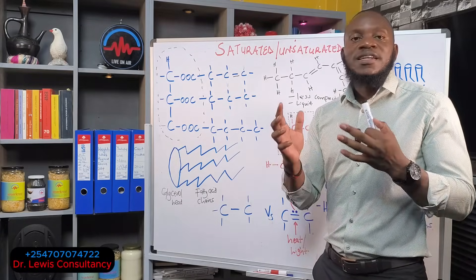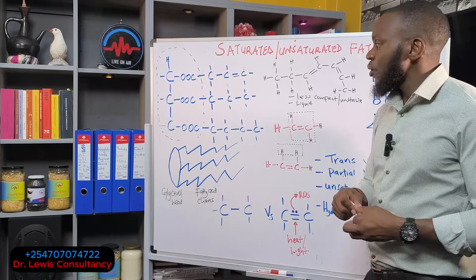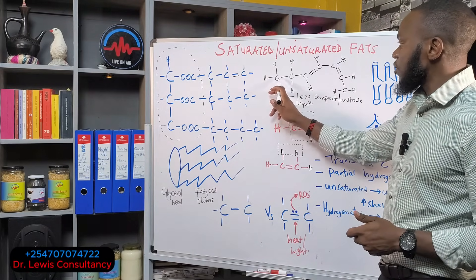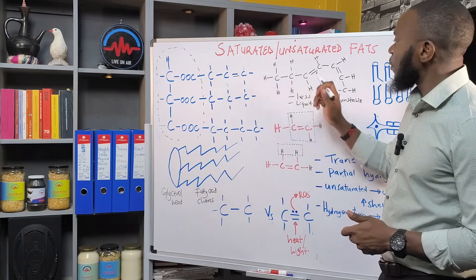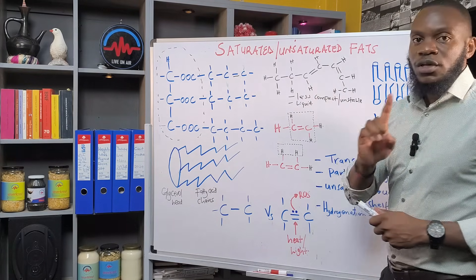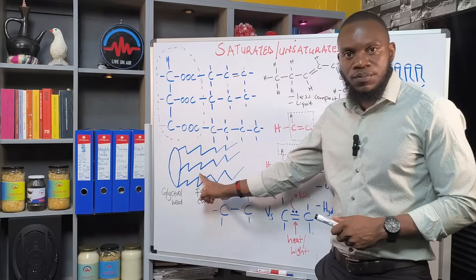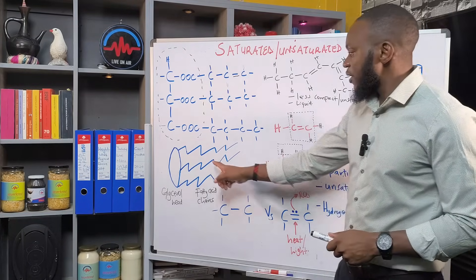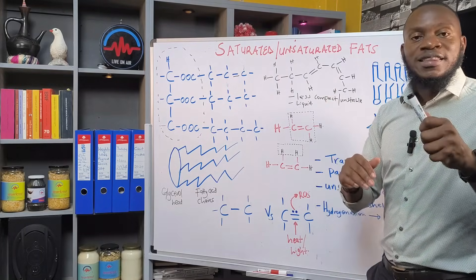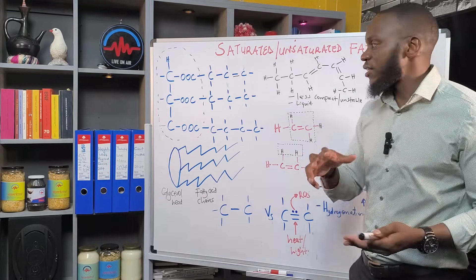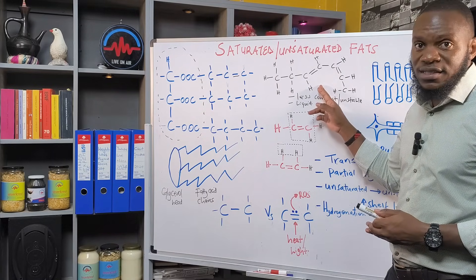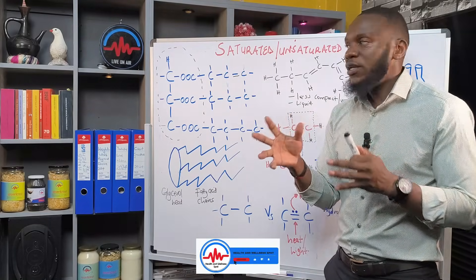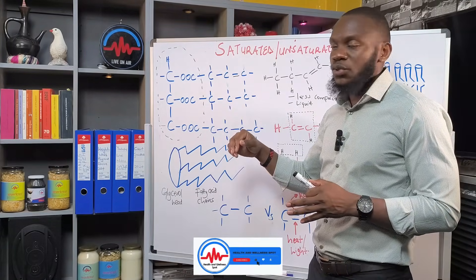The challenge comes in when we introduce a double bond — that double bond causes the structure to bend. A straight chain from single bonds becomes bent when a double bond is introduced. These fatty acid chains, when they bend, become very unstable — that makes them liquid. That's why most unsaturated fatty acids are actually liquid. Saturated ones are solid because the structure is very compact, holding the molecule together. That's why most animal fats are solid at room temperature.